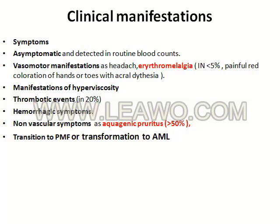Clinical manifestations and symptoms: patients may be asymptomatic, or may present with vasomotor manifestations such as headache. Erythromelalgia — a painful red coloration of the hands or toes with acral dysesthesia — is a distinguishing feature of polycythemia vera. Other manifestations include hyperviscosity, thrombotic events, hemorrhagic symptoms, and non-vascular symptoms such as aquagenic pruritis, which occurs in more than 50% of patients and is precipitated following a warm shower or hot bath. Disease can progress via transition to primary myelofibrosis or transformation to AML (acute myeloid leukemia).